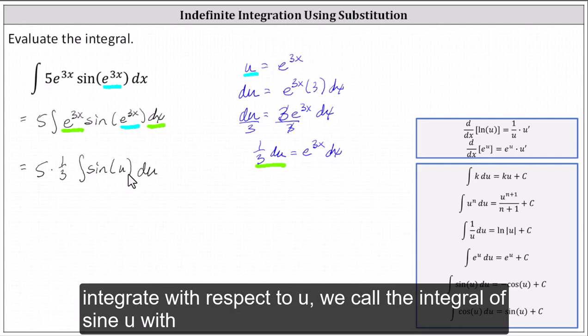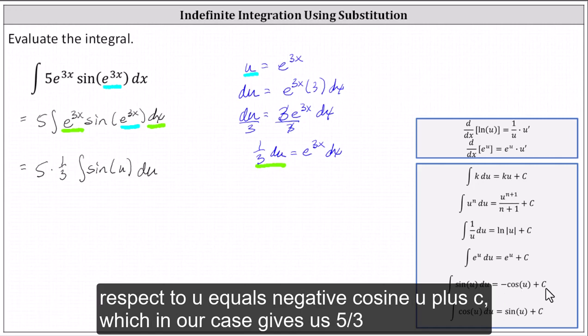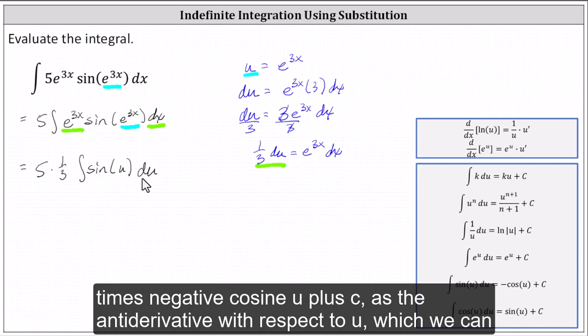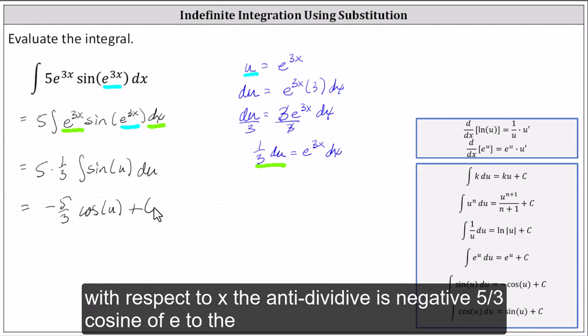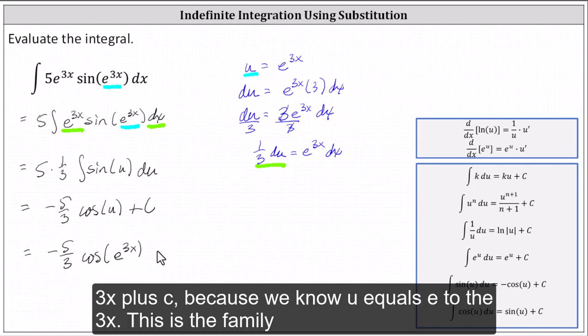And now we integrate with respect to u. Recall the integral of sine u with respect to u equals negative cosine u plus c, which in our case gives us 5/3 times negative cosine u plus c as the antiderivative with respect to u, which we can write as negative 5/3 cosine u plus c. This means with respect to x, the antiderivative is negative 5/3 cosine of e to the 3x plus c, because we know u equals e to the 3x.